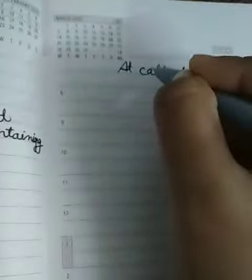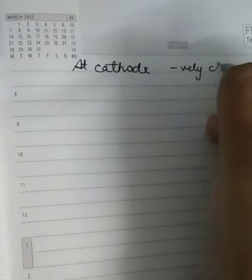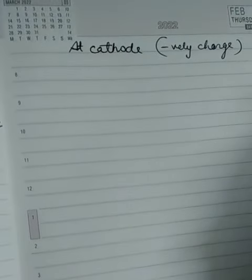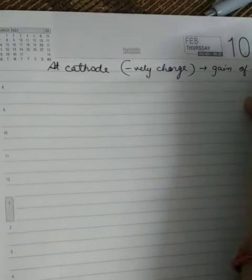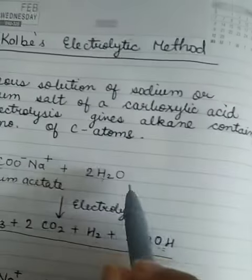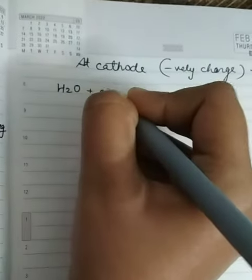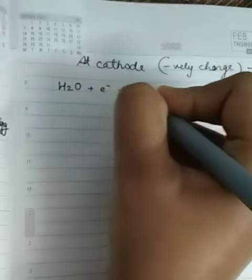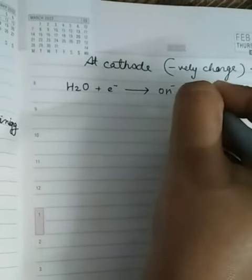Next we will talk about what happens at cathode. Cathode is negatively charged, so gain of electrons will be here. We have H2O, so we are taking H2O plus electrons. Addition of electrons forms OH minus plus H free radical.